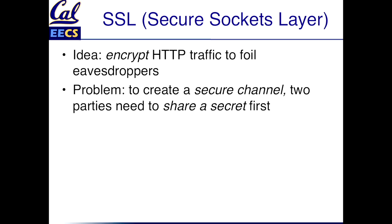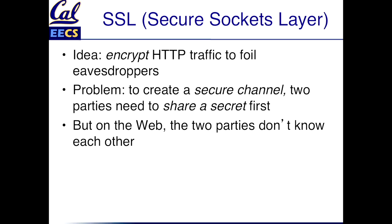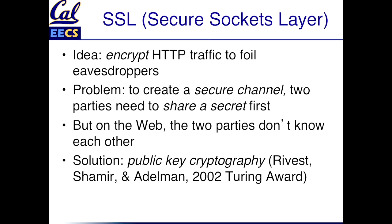The problem you have to solve in order to create what's called a secure channel — meaning a channel that only you and the other party are able to understand — is that you and the other party first have to share a secret. On the web that's very difficult because the first time you visit a site, there's no piece of common information you could use as the basis of the shared secret, which is why Rivest, Shamir, and Adelman won the Turing Award for a practical implementation of a scheme that could actually do this: public key crypto.